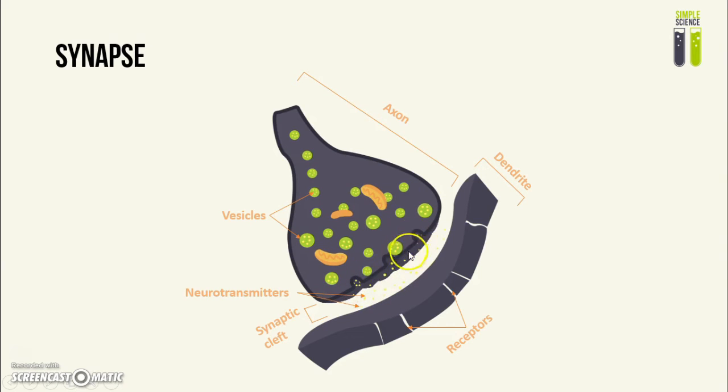The presynaptic membrane is this stuff, so the vesicles fuse with it as seen here, and the neurotransmitters are released into the synaptic cleft. Then the neurotransmitter diffuses across the synaptic cleft, as you can see it will diffuse across here to this side.